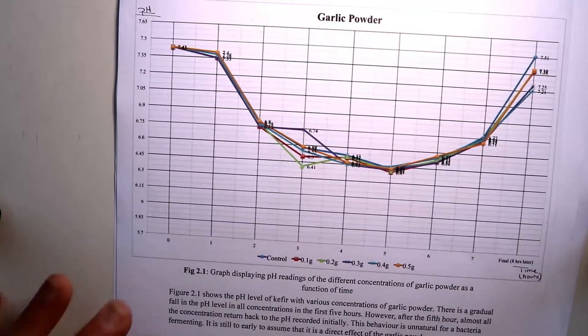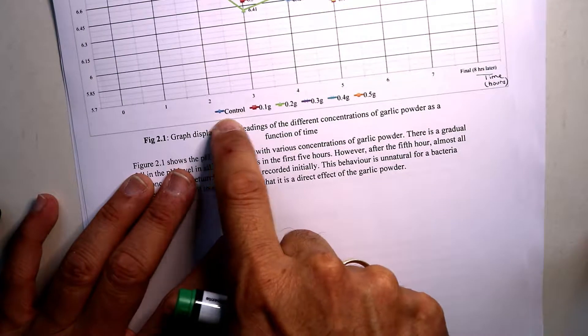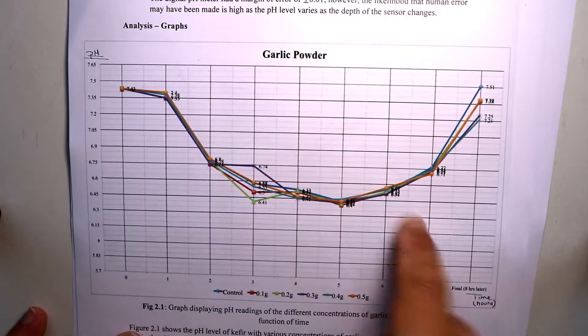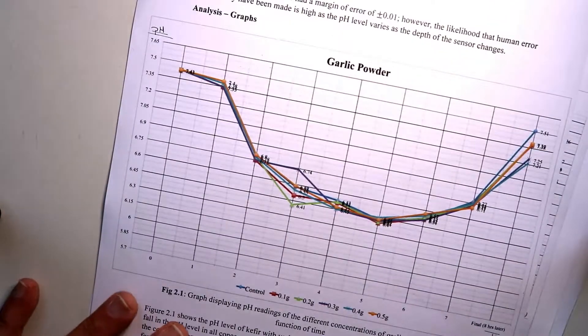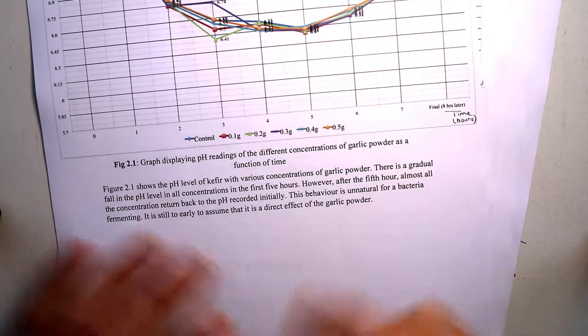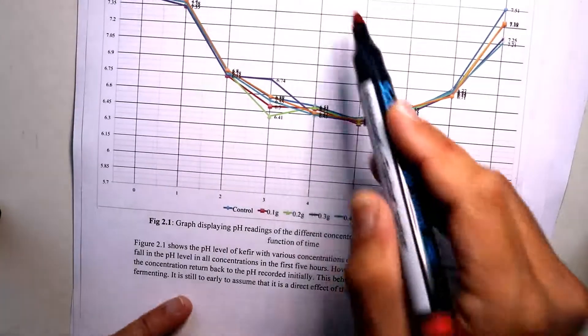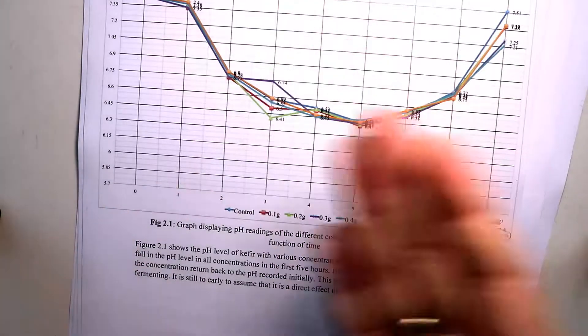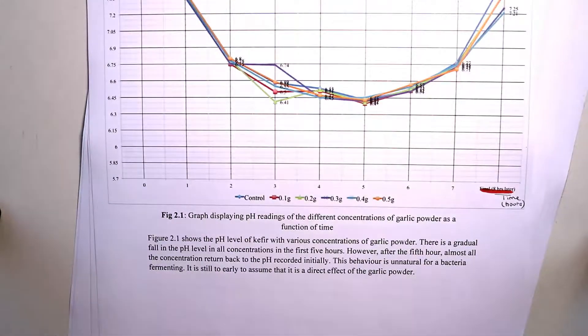So then we have a graph, and the graph I have absolutely no idea what is supposed to be. Look at this, yeah, it is here. The colors, they're all overlapping. There's a pH he just added here at the edge. Then what is this? Final, eight hours later, final? Why final? Why not just eight hours? I don't understand. Massively confusing. Garlic powder—what do you mean garlic powder? What about rate of growth of kefir or whatever? I don't even know what this means.